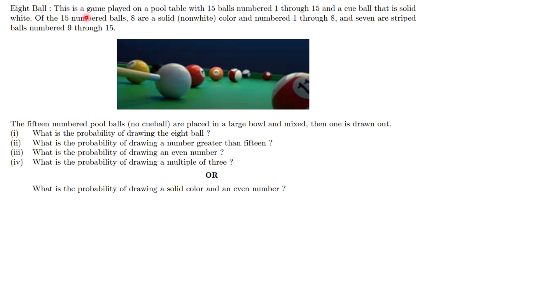Example: 8 ball. This is a game played on a pool table with 15 balls numbered from 1 to 15 and a cue ball that is solid white. Of the 15 numbered balls, 8 are solid and a non-white color, numbered 1 through 8, and 7 are striped balls numbered from 9 to 15.